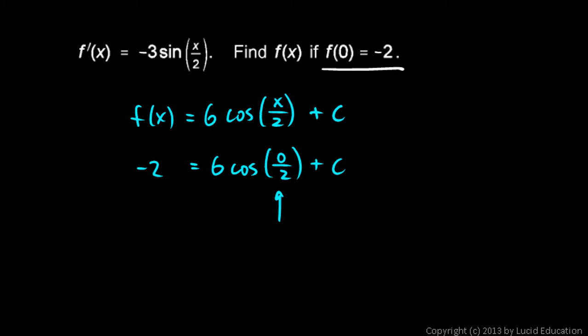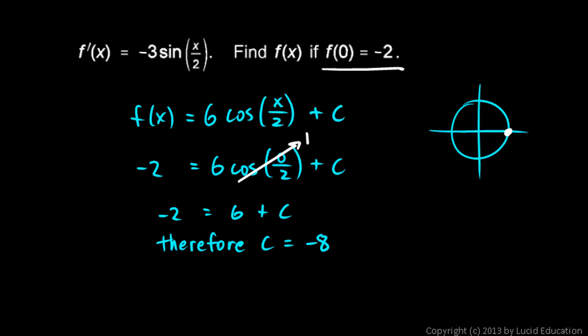So what's the cosine of 0? You should recognize that just on the unit circle. 0 angle is right there, and it has a cosine of 1. So this becomes 1. So we just get negative 2 equals 6 times 1 plus C. Therefore C has to be negative 8.